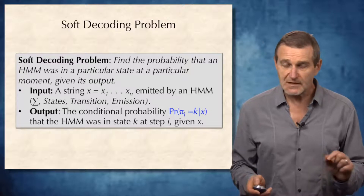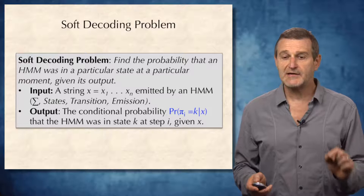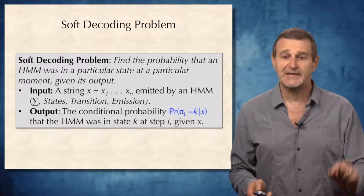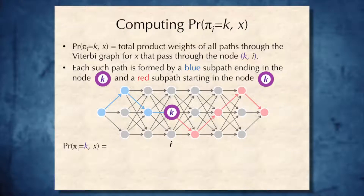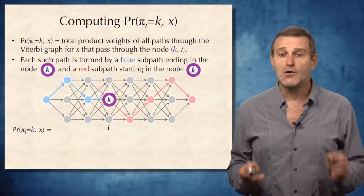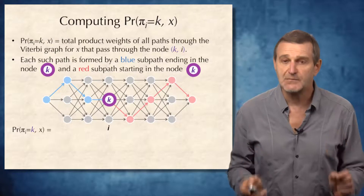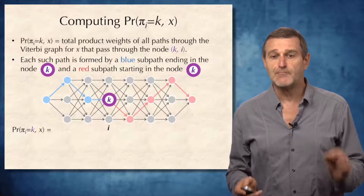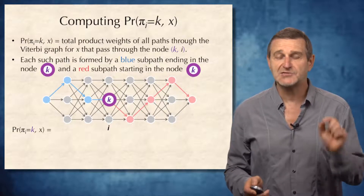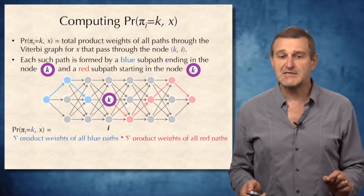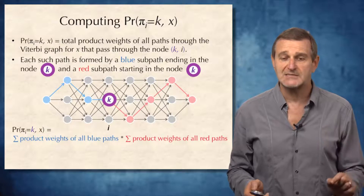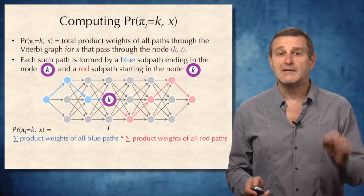To find P(π(i)=k | x), we need to solve the soft decoding problem: find the probability that an HMM was in a particular state at a particular moment, given its output. To solve this, we first compute probability π(i)=k,x, which is the total product weight of all paths through the Viterbi graph for x that pass through the highlighted node. Each such path is formed by a blue subpath from the source to the highlighted node, and a red subpath from the highlighted node to the sink. Therefore, probability π(i)=k,x equals the sum of product weights of blue paths multiplied by the sum of product weights of red paths.